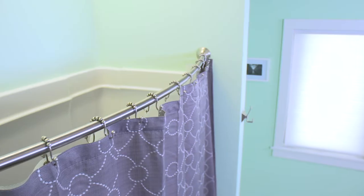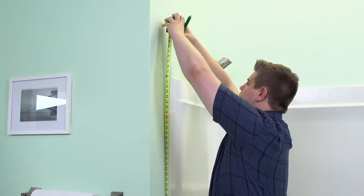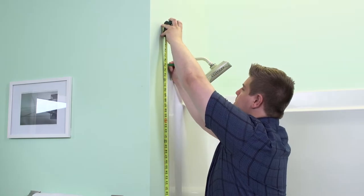Today we're going to be installing a curved shower rod for this shower. Begin by measuring the height of where you want to install the shower rod, which will be the height of your shower curtain length.